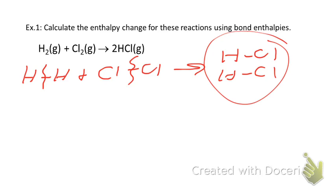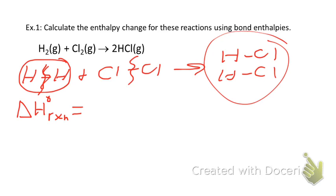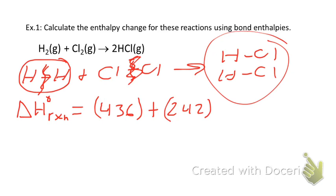Delta H of the reaction under standard conditions equals the sum of the bond enthalpies of bonds broken. Looking up the table, to break the H-H bond it requires 436 kilojoules of energy. We add that to the energy required to break the single Cl-Cl bond, which is 242 kilojoules. These together are the sum of the energy of the bonds broken — that's how much energy is needed to break all the bonds in the reactant molecules.